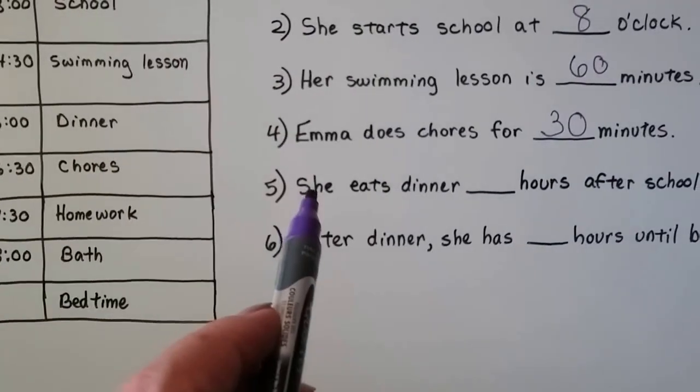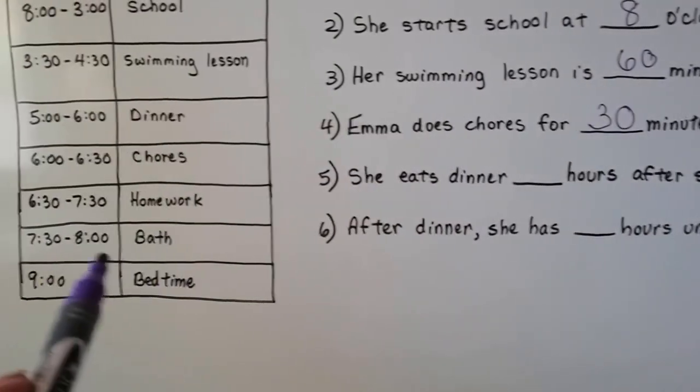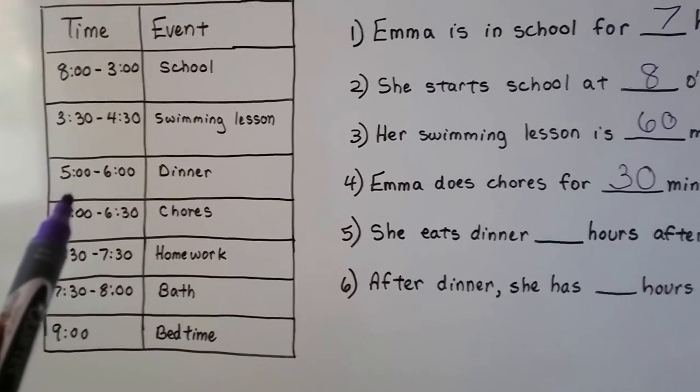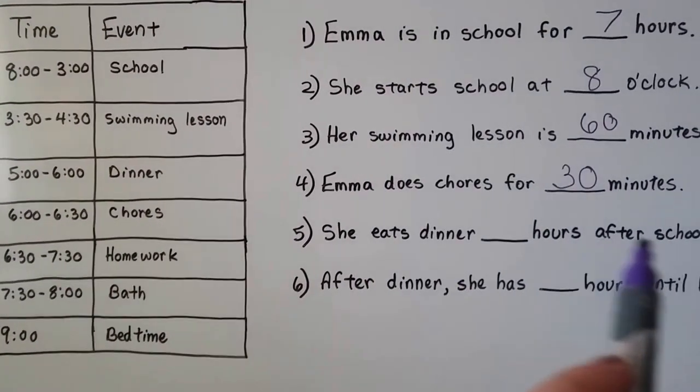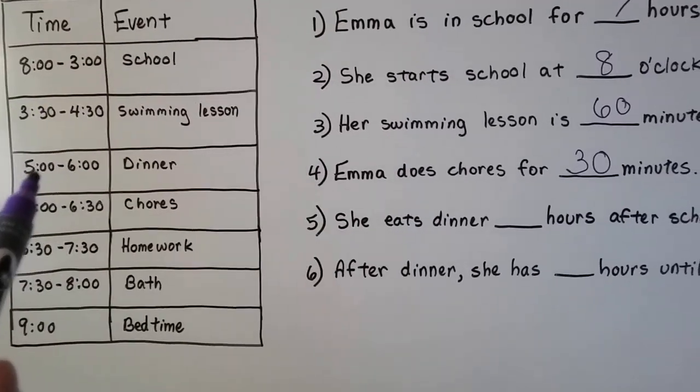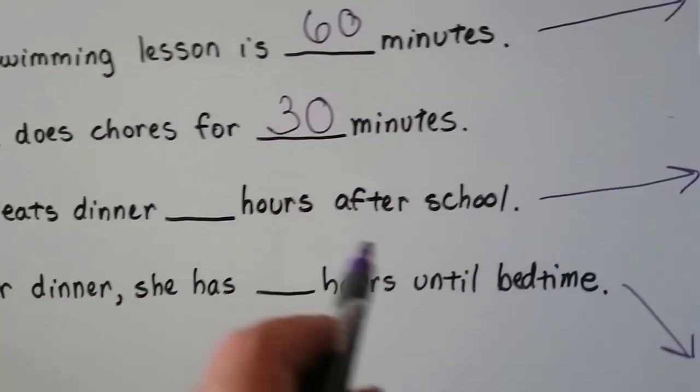Now it says, she eats dinner blank hours after school. So she's eating dinner at 5 o'clock, but it says after school. See that? So when school gets out, it's 3 o'clock. She eats dinner at 5 o'clock. How many hours after school is she eating dinner?